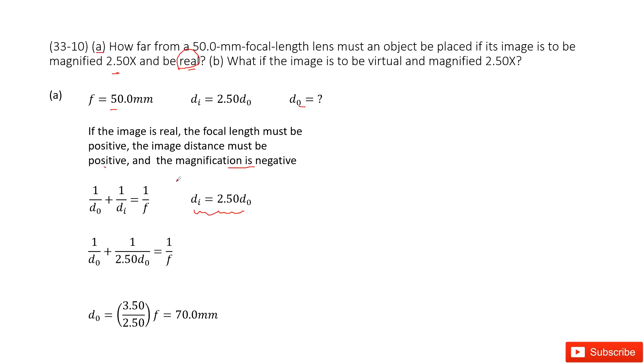See, now we can write down the same lens equation. You can see d0 we don't know, dI we don't know, but the focal length is given. One thing we can solve it is we replace the dI as 2.5 d0, right? 2.5 d0.